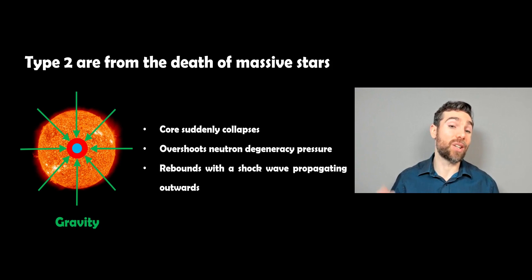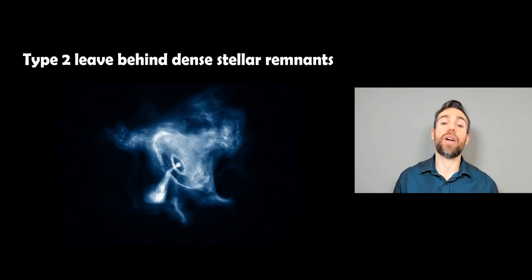And they have different mechanisms really because this is a core collapse whereas the type 1a is more thermonuclear, so there are different processes that cause the supernova, but they're both very, very energetic, have very high energies.